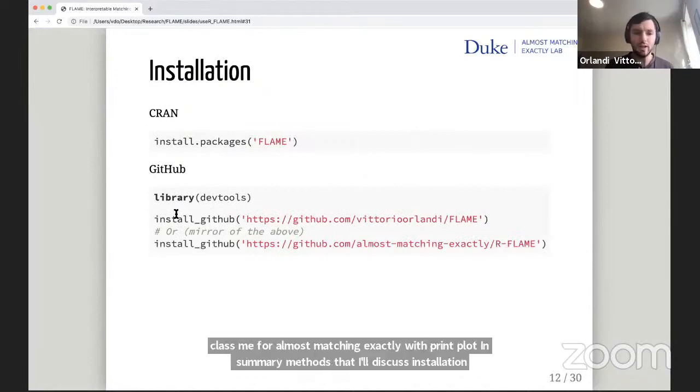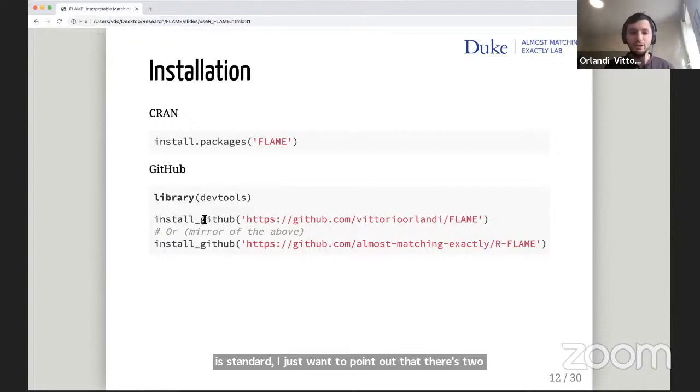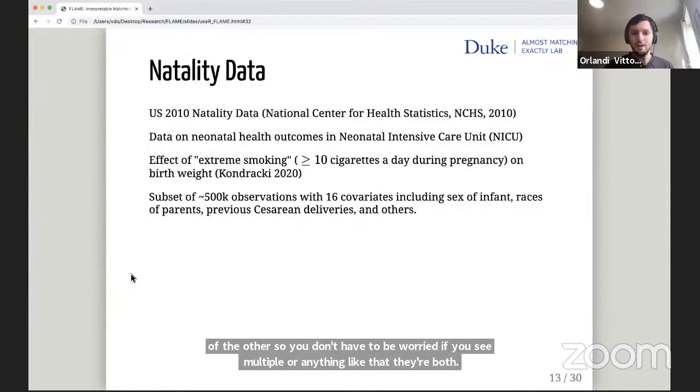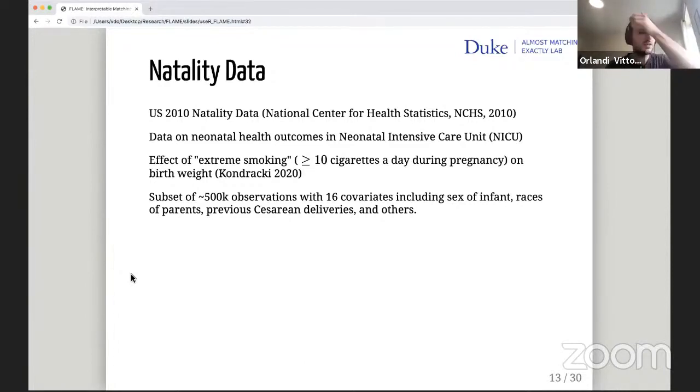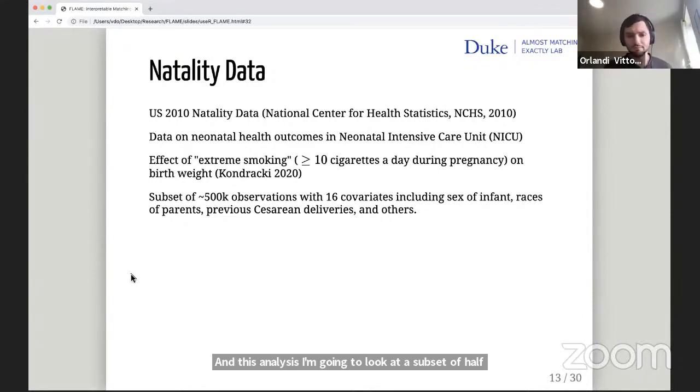To illustrate the package, I'm going to look at some data put out by NCHS in 2010, which is data on neonatal health outcomes in the NICU. In particular, we're going to look at the problem studied by Kondroski in 2020 on the effect of extreme smoking on birth weight. Extreme smoking is defined as the mother smoking at least 10 cigarettes per day throughout her pregnancy. In this analysis, I'm going to look at a subset of half a million observations. I'm going to use all the covariate information which includes the sex of the infant, races of the parents, previous cesarean deliveries and others. If you download this data set, the first thing you'll notice is there's a lot of missing data. When you're trying to match, you need to decide what you're going to do with it.